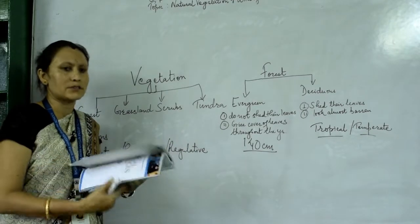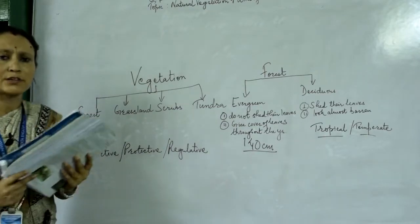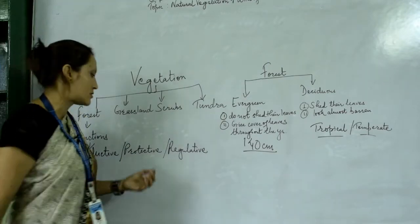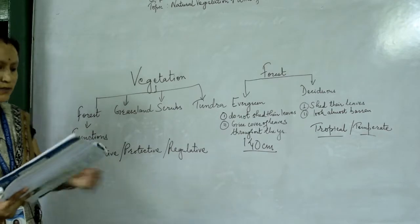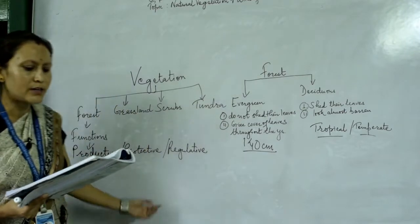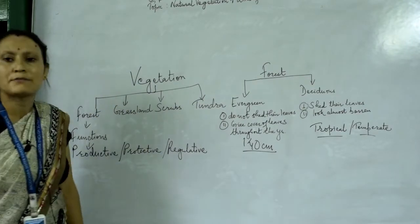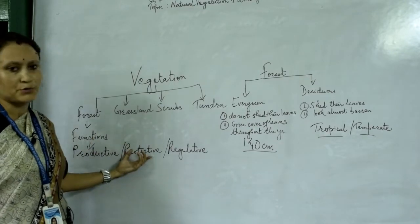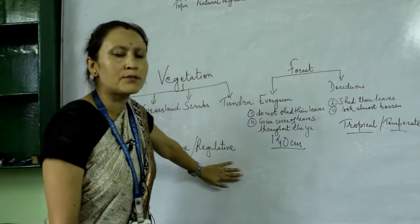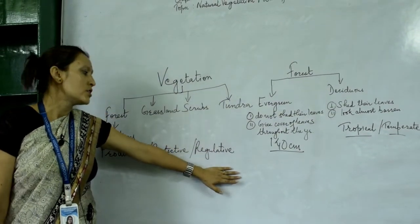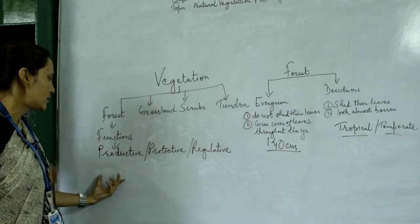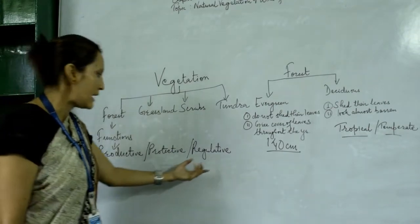Protective functions: forests check soil erosion and avoid land degradation. Forest also provides cover for a number of ecosystems to support wildlife growth and helps to conserve water. Regulatory functions: forest checks the balance of oxygen and carbon dioxide in the ecosystem. So the functions of forest are categorized under three heads: productive, protective, and regulatory.